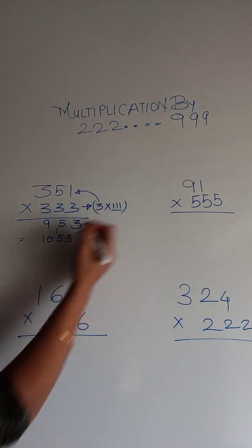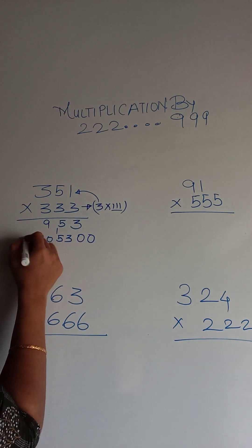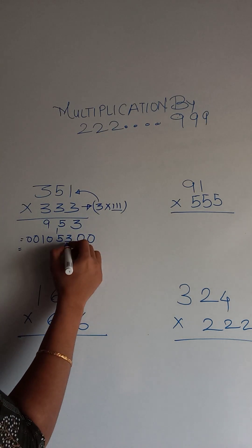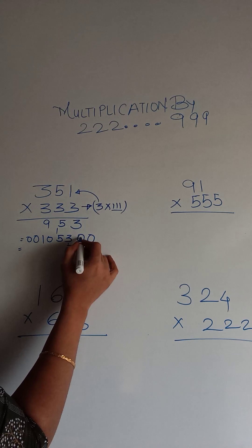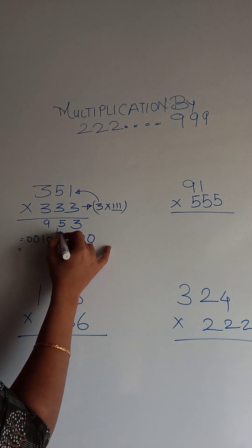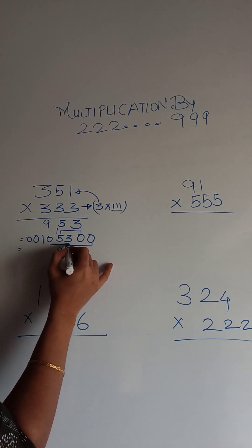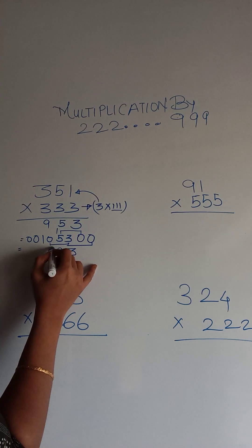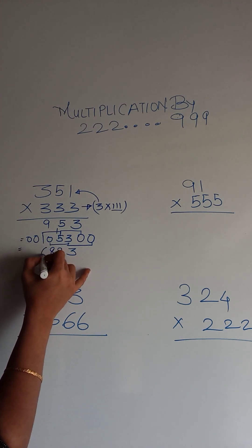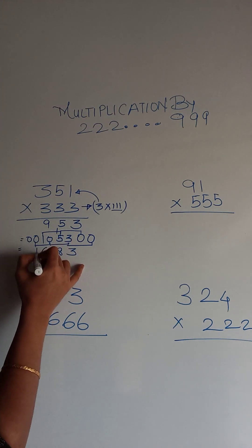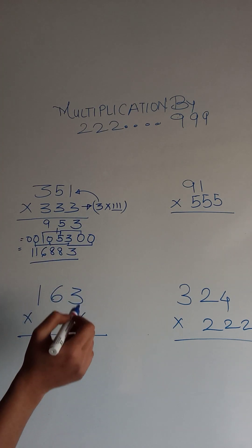Later on we will use the double knot sandwich method to multiply it with 111. So we are adding two zeros here. Now let's start adding using the sub-sutra Anurupyena. So first is 3 plus 0 plus 0 is 3, later on 5 plus 3 plus 0 is 8, the next digit is 5 plus 3 plus 0 is 8, next digit is 5 plus 1 is 6, and then 1 and 1. So this is your final answer.